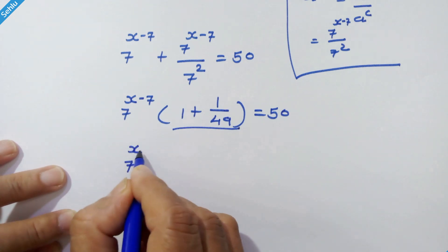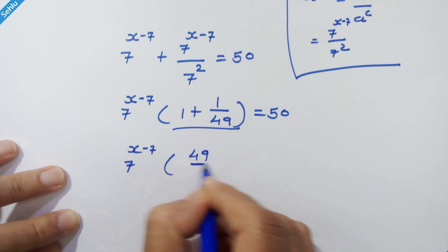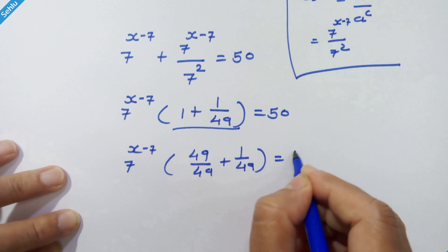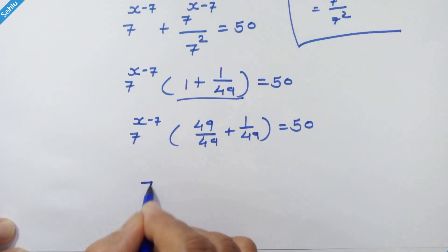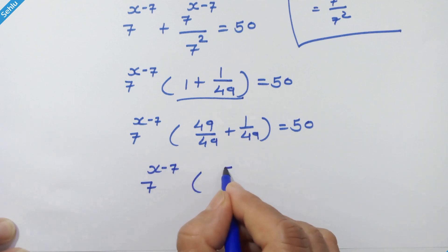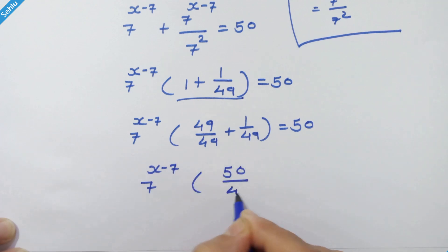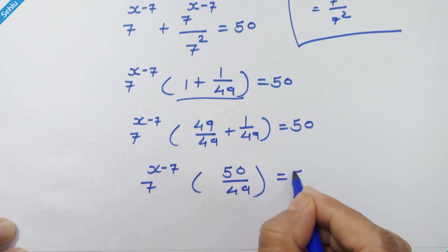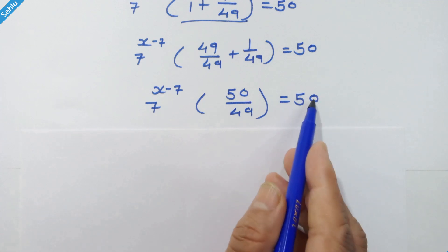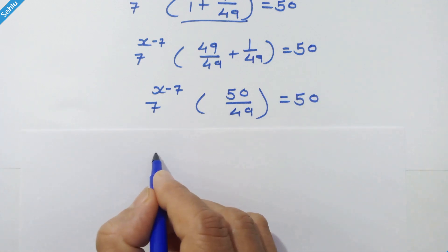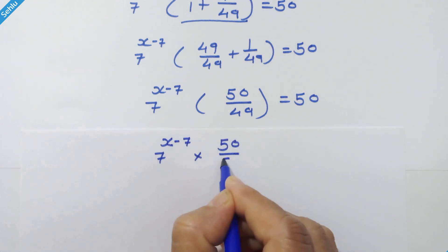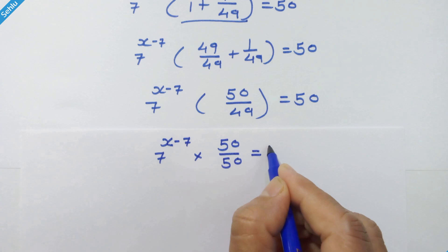Taking LCM, we have 49 plus 1 upon 49, which gives us 7 raised to x minus 7 into 50 upon 49 is equal to 50. Now let's move 49 to the right-hand side and 50 to the left-hand side, so we have 7 raised to x minus 7 into 50 upon 50 is equal to 49.